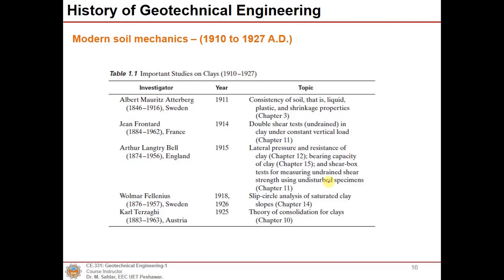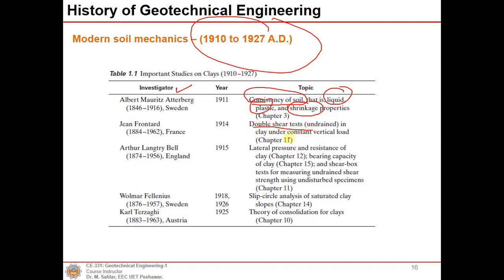In modern soil mechanics from 1910 to 1927, Atterberg focused on studying the consistency of soil, which is related to liquid limit, plastic limit, and shrinkage limit. Frontard focused on developing double shear tests. Bell focused on studying lateral pressures and resistance of clays and the shear box test. Fellenius developed in 1918 the slip circle analysis of saturated clay slopes. Terzaghi studied the theory of consolidation for clays, which will be studied in Geotechnical Engineering 2.